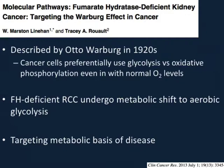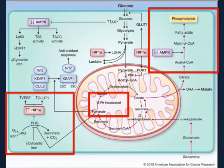Type 2 papillary RCC is one of the best-described examples of the metabolic shift known as the Warburg effect in cancer — described almost 100 years ago by Otto Warburg. Essentially, these cancer cells preferentially use glycolysis as their source of ATP instead of the normal Krebs cycle and electron transport chain in the mitochondria, even in the setting of normal oxygen levels. It's well-described that tumours deficient in fumarate hydratase undergo this distinct metabolic shift to aerobic glycolysis, which opens up opportunities to target the metabolic basis of disease.